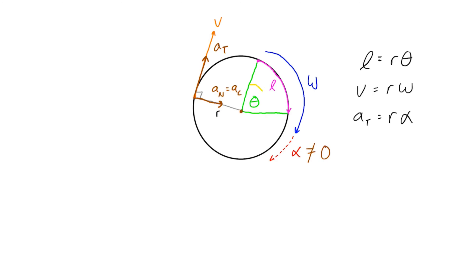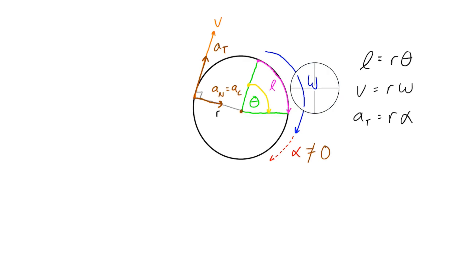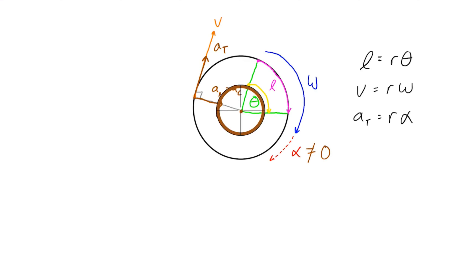If we had another point at only halfway out, at a distance of r/2, then the arc length it follows will be half as long as the outer point's arc length. Given the same angular velocity, it will have one half of the tangential velocity, and given the same angular acceleration, it will have half of the tangential acceleration. So all of these quantities are proportional to how far away from the center the point is moving in this circular path.